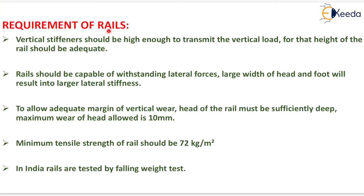Requirements of rails: Vertical stiffness should be high enough to transmit the vertical load — for that, the height of the rail should be adequate. Rails should be capable of withstanding lateral forces; large width of head and foot will result in larger lateral stiffness. To allow adequate margin of vertical wear, the head of the rail must be sufficiently deep. Maximum wear of head allowed is 10 mm.